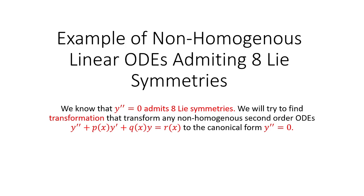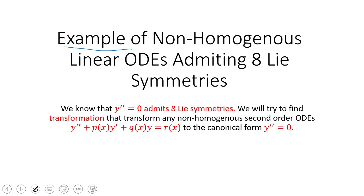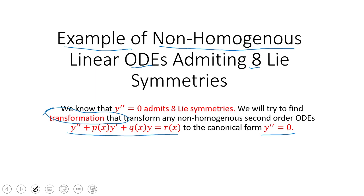Bismillahir Rahmanir Raheem. In this video we are going to discuss an example of nonlinear homogeneous ODE that admits Lie symmetries. We are going to convert this type of non-homogeneous linear ODE — the general non-homogeneous linear ODE — to the canonical form. We are interested in the transformation and how to find it.